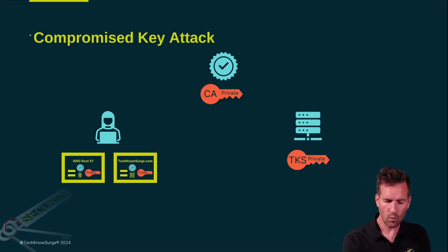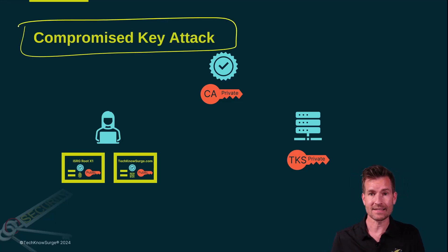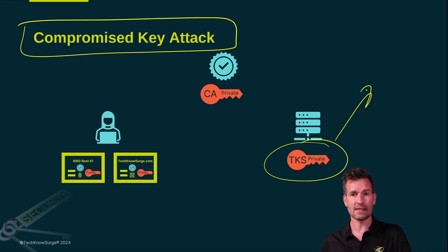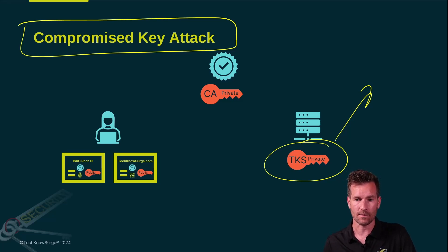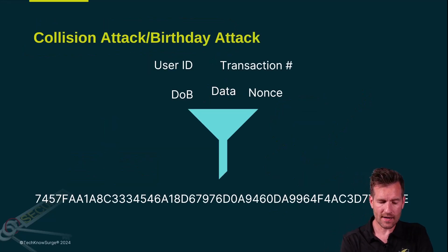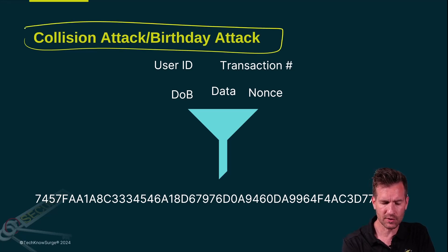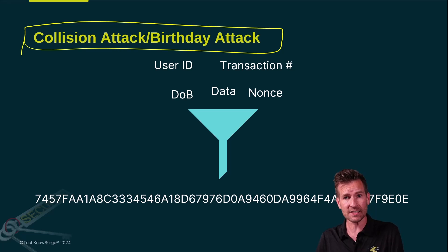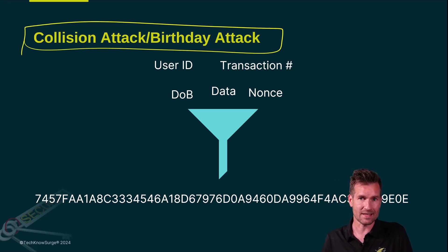From an attack standpoint, one of those attacks is the compromised key attack — just like it sounds, it means that a key has been compromised, or someone has stolen the key or gained access to a key that shouldn't have access to it. If that's the private key, this can be a lot of problems because somebody can impersonate your website. Another thing to watch out for is collision attacks or birthday attacks, which has to do with your hashing algorithms and making sure they're not susceptible to these types of attacks.